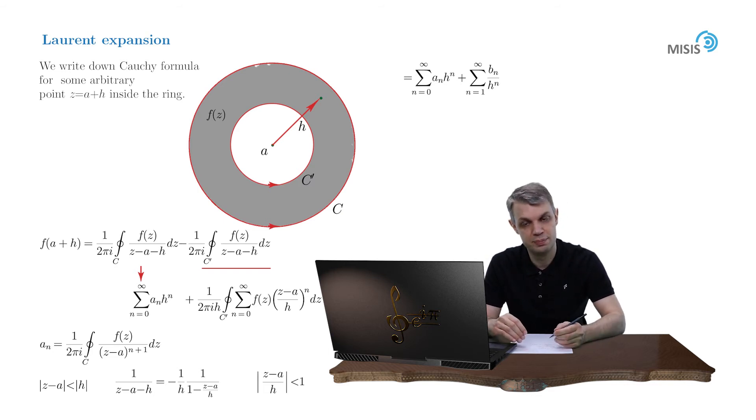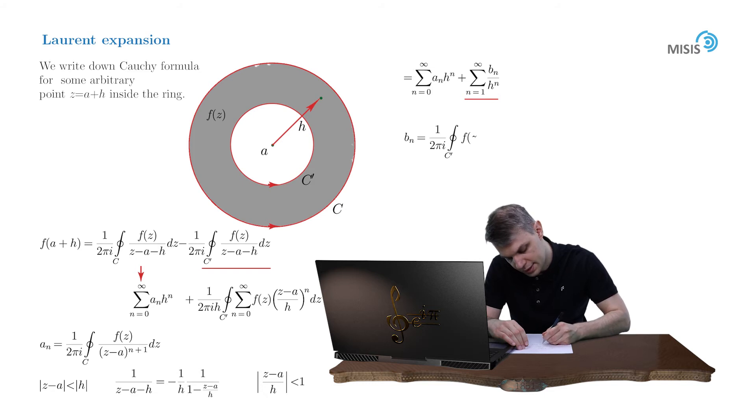So in the end, we obtain the convergent power series in negative powers of H. And the corresponding expression for the coefficient is as follows: F of Z times Z minus A to the power of N minus 1, DZ.